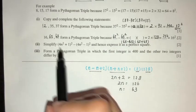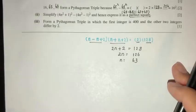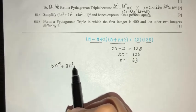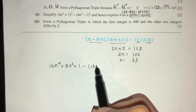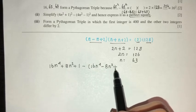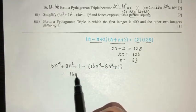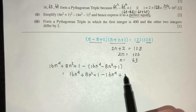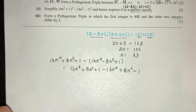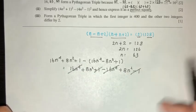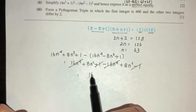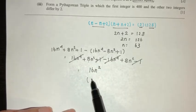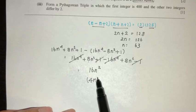For part 2, simplify the expression. Expanding: 16n to the power 4 plus 8n squared plus 1, minus 16n to the power 4 minus 8n squared plus 1. The 16n⁴ terms cancel, the constant 1 terms cancel, leaving 8n² plus 8n², which equals 16n squared. Expressed as a perfect square, that is 4n squared.